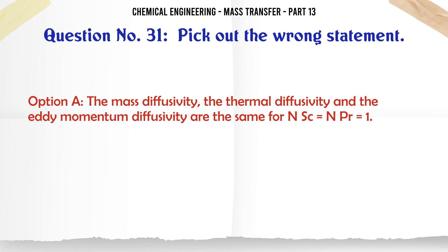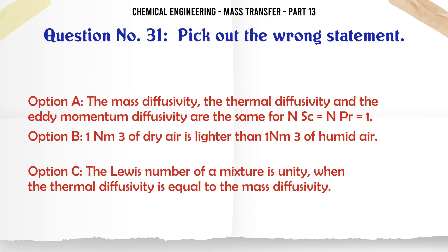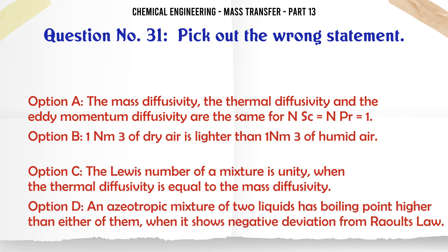Pick out the wrong statement: A. The mass diffusivity, thermal diffusivity, and eddy momentum diffusivity are the same for NSc = NPr = 1. B. 1 NM³ of dry air is lighter than 1 NM³ of humid air. C. The Lewis number of a mixture is unity when the thermal diffusivity equals the mass diffusivity. D. An azeotropic mixture of two liquids has a boiling point higher than either of them when it shows negative deviation from Raoult's law. The correct answer is: 1 NM³ of dry air is lighter than 1 NM³ of humid air.